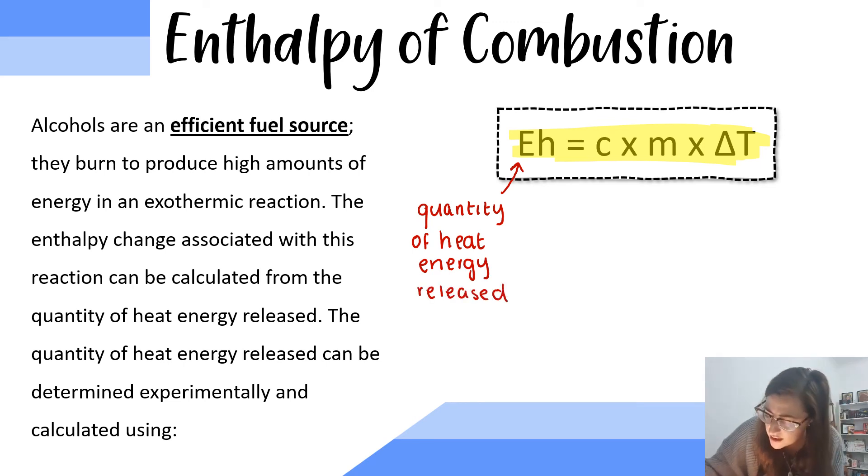C is a constant, and it is 4.18 kilojoules per kilogram per degree, and it is the heat capacity of water.